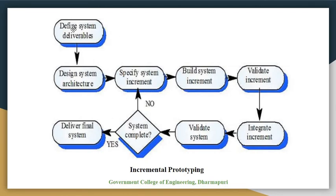We can see this with the help of a diagram. First we define system deliverables, then design the system architecture, then specify the system increment, build the system increment, and validate the increment. Next we integrate the increment, then validate the system. If the system is okay with no problems, we deliver it. Otherwise, we go back and specify the changes that need to be made. This is incremental prototyping.